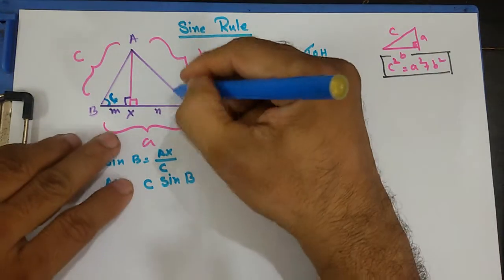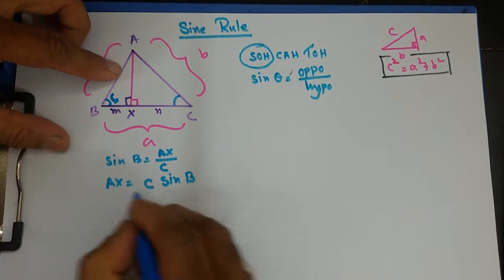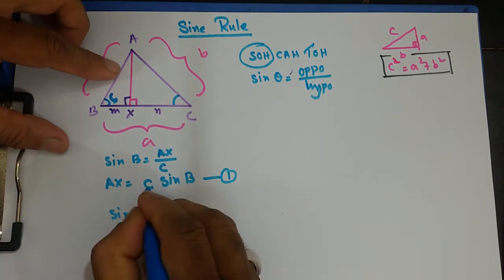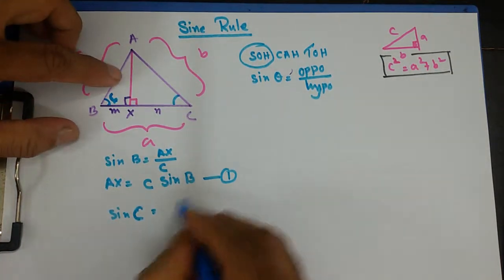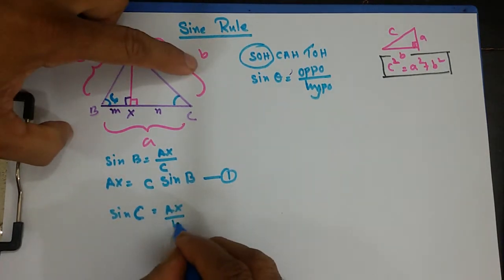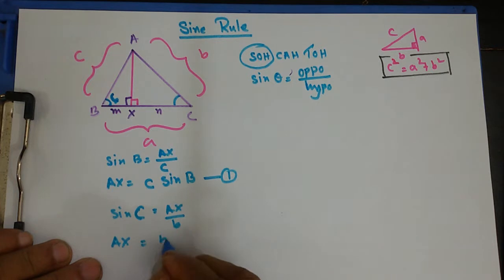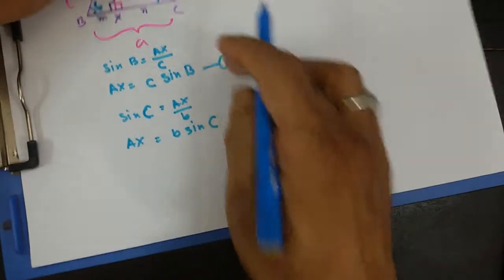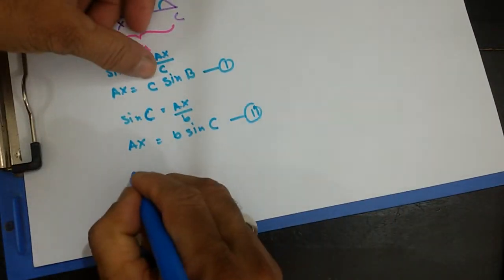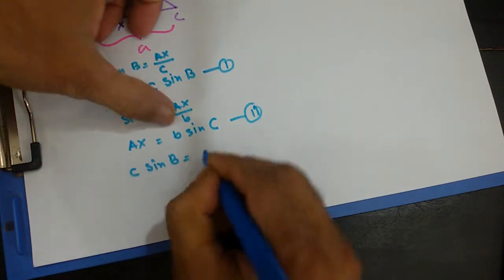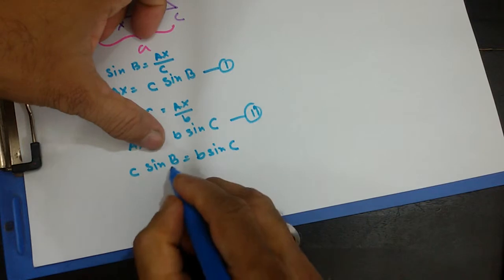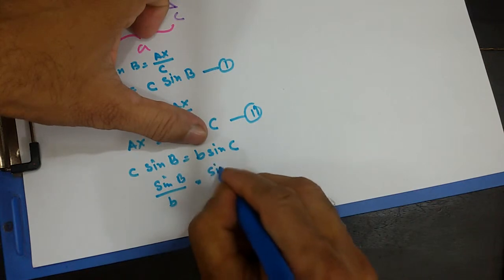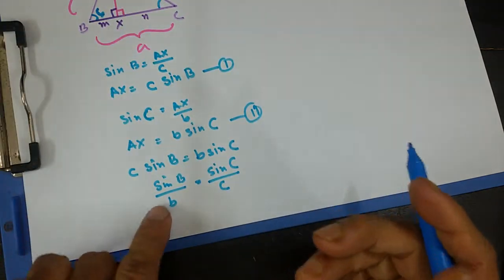Now if I go for sine C, that's equation two. Sine C equals opposite AX divided by hypotenuse b. So AX equals b·sine C — that's equation two. Comparing these two: AX equals AX, so c·sine B equals b·sine C. Therefore, sine B over b equals sine C over c. So I've got that.